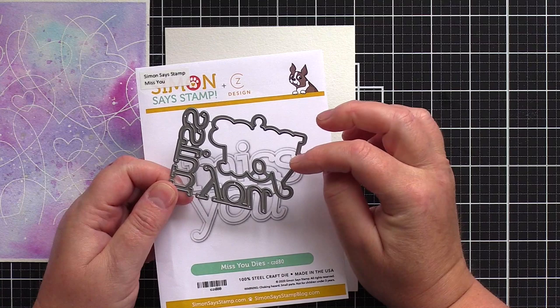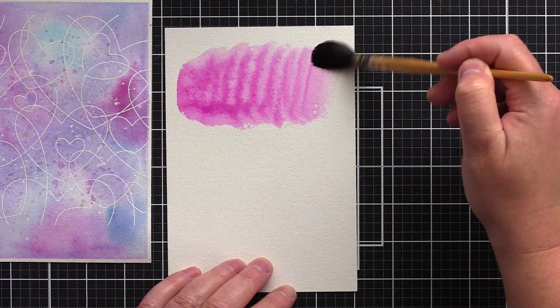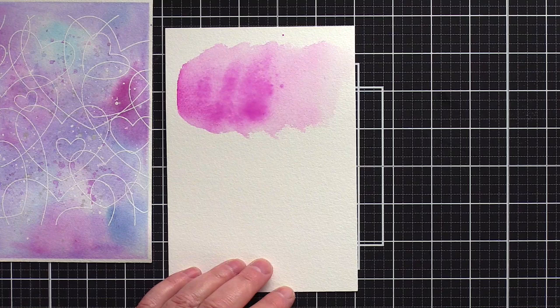I think we're all missing seeing people at the moment, family and friends in particular, and so I pulled out the Miss You dies from CZ Design. These dies have the letters and then a background piece.